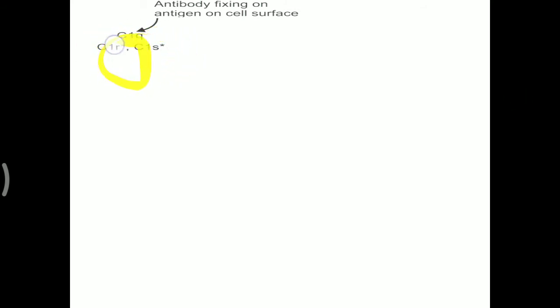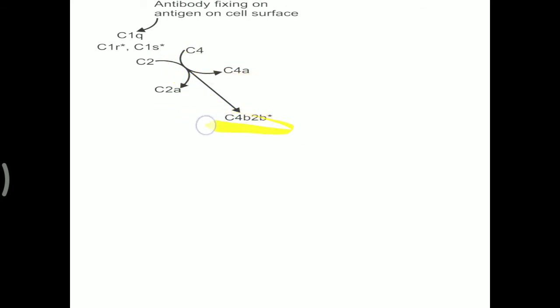The cascade begins with antibody or immunoglobulin fixing on antigen on the cell surface. The first component C1QRS binds: C1Q attaches over the antibody, and C1S activates proteolytic activity. C2 and C4 are broken down into C2A and C2B, and C4A and C4B. The B parts — C4B and C2B — activate the third component C3. C3A is liberated, and C3B can lead to opsonization.